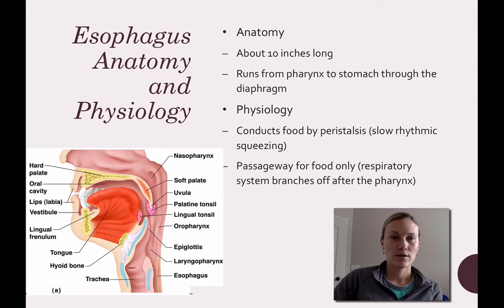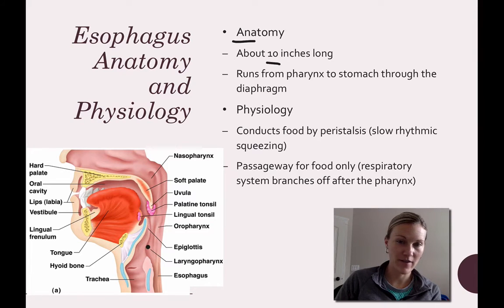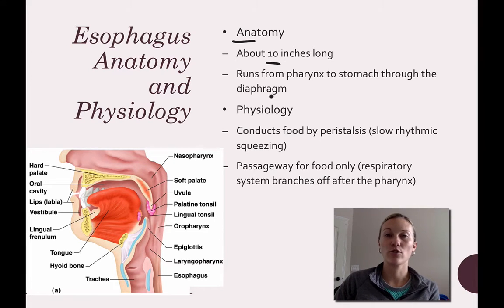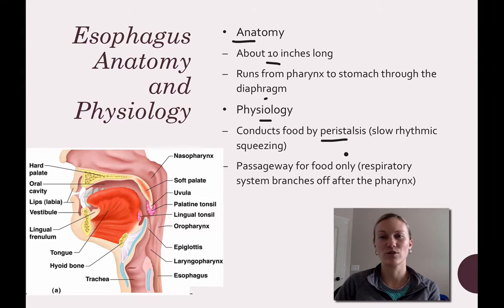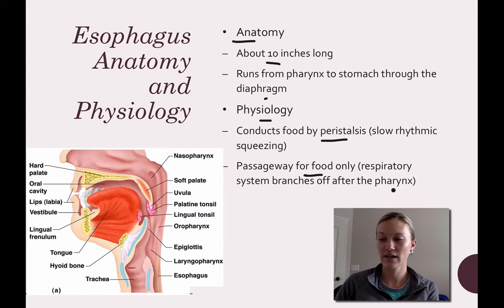The esophagus is about 10 inches long, running from your pharynx all the way down to your stomach and through your diaphragm. It moves food by peristalsis — that slow rhythmic squeezing — and is a passageway for food only. The respiratory system branches off at the pharynx.